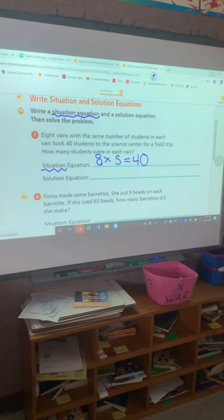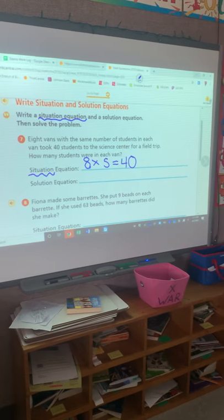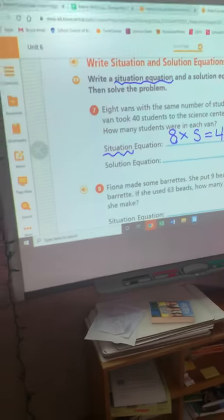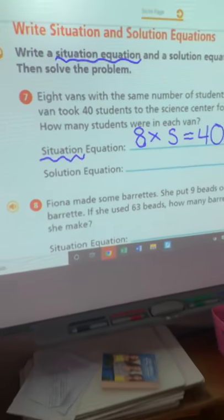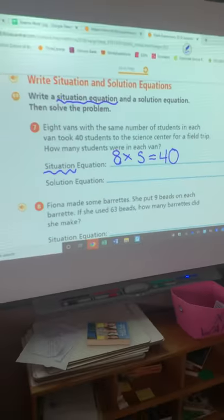All right. So we're missing a factor. We could count by eight to get to 40 to solve this, right? What is the solution equation though? How do we solve a missing factor question? We do the opposite, right? We're going to divide, guys.